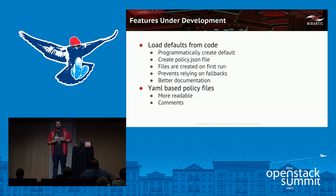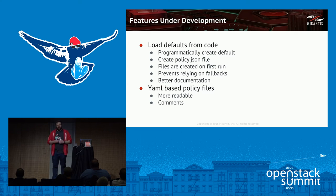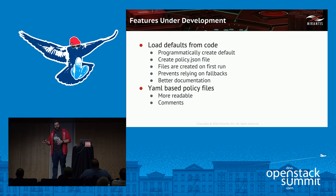Every time you spin up a new copy of the API you get a new copy of the policy file which you can then modify, but it makes it a lot simpler to manage. A big part of this is that policy.json files today — if I pull the policy.json file for Nova from trunk and from somebody else — I have no guarantee they're going to be the same thing, because people modify them all the time.